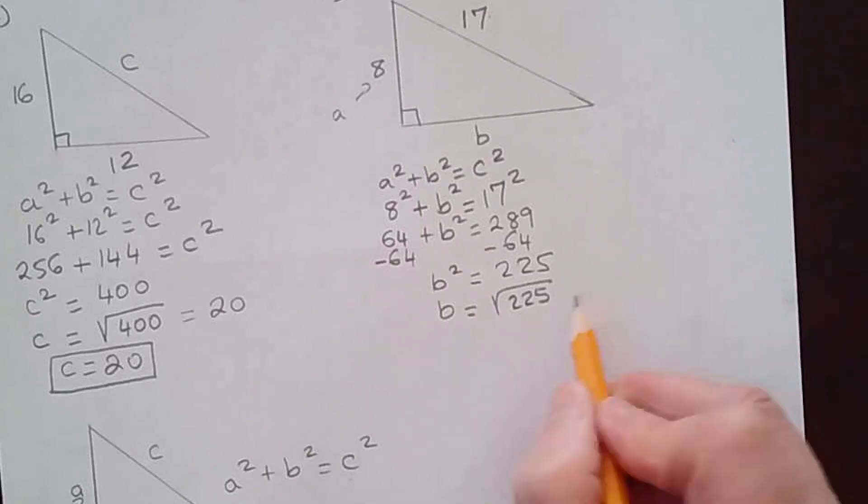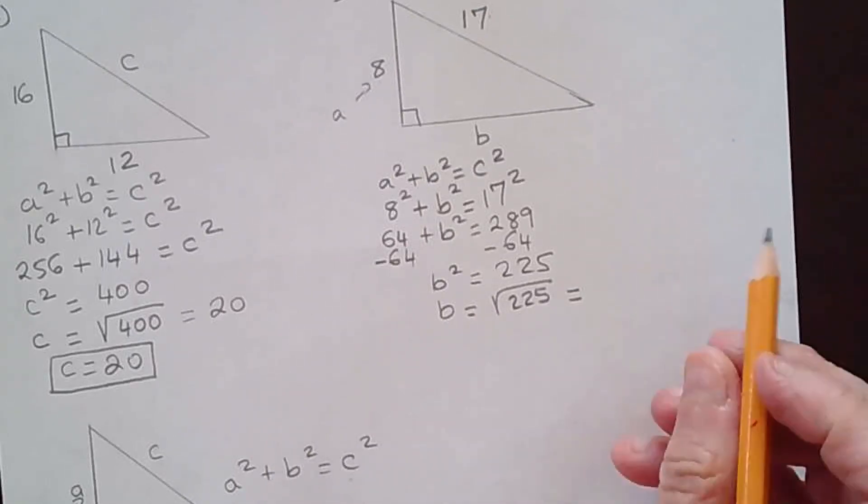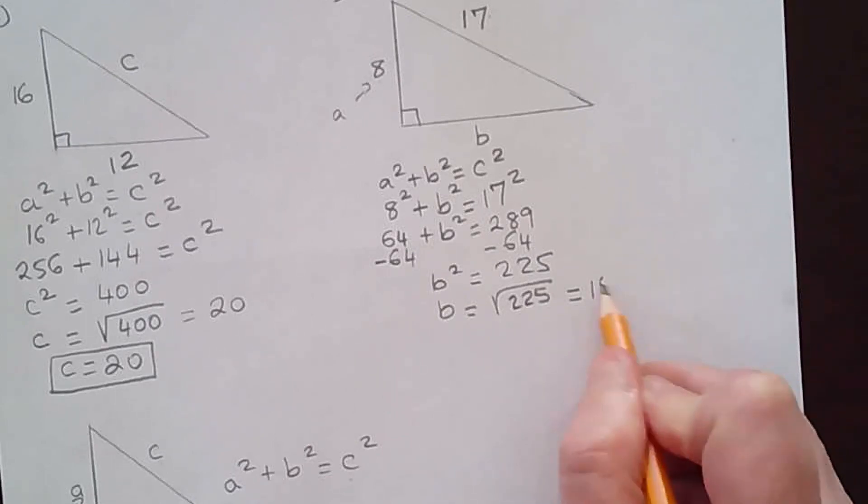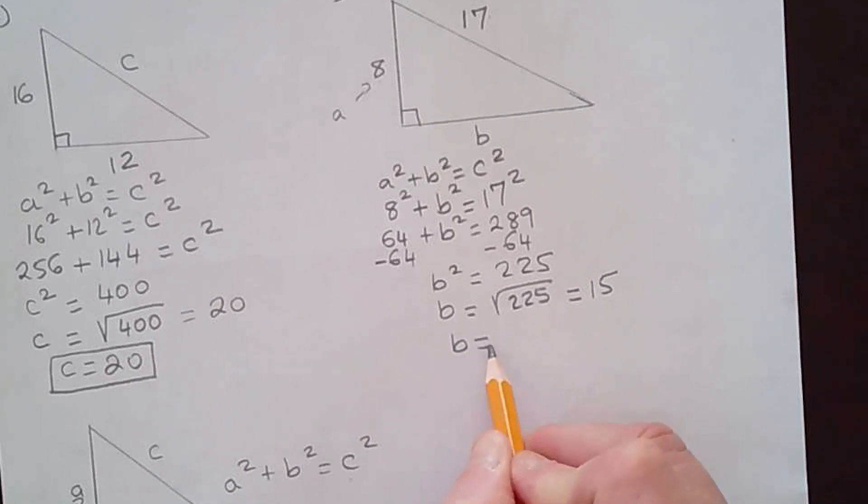You're going to have to take the square root property, so b equals the square root of 225. Remember it cannot be negative, so it's only the positive answer. Square root of 225 is 15, so the missing side has length of 15. Again, I do not have the unit.